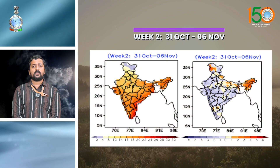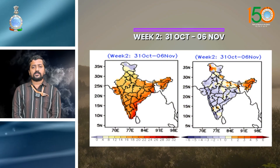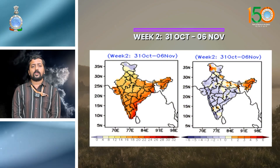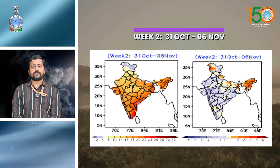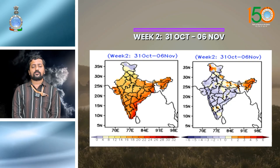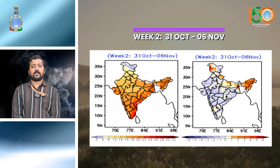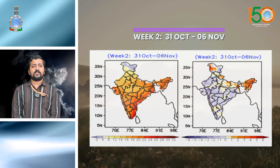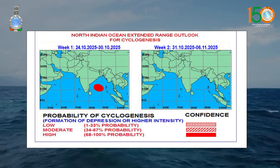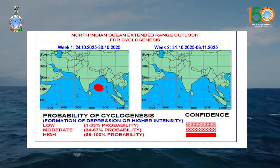With respect to week 2, minimum temperature is forecasted to be below normal over many parts of Northwest India and above normal over parts of Northeast India, South Karnataka, and over parts of the Western Himalayan region.